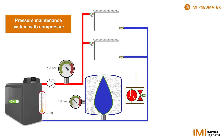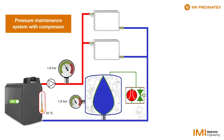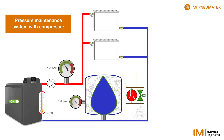A dedicated controller detects this change of value and opens a valve so the pressure can escape and the butyl bag can continue to be filled with water. The vessel is filled until the pressure drops down to 1.6 bar. Then the valve closes again.